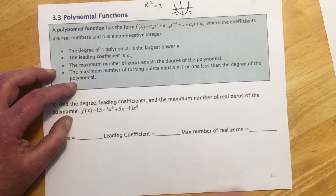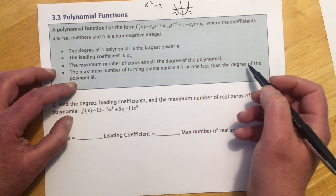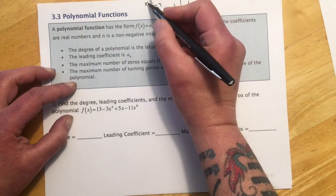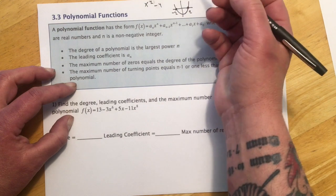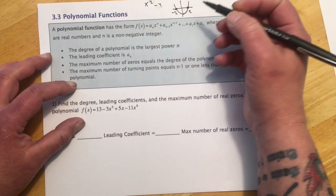The maximum number of turning points equals n minus 1, or 1 less than the degree of the polynomial. So this would be degree 2, 1 less than that would be 1, and our turning point is right there at the vertex.